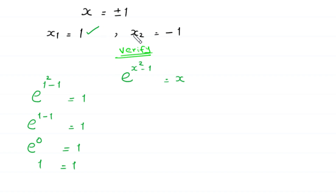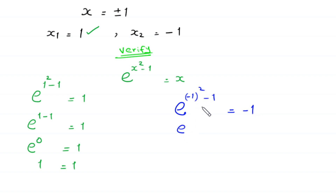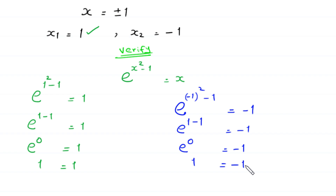Now putting x2 equals negative 1 in the equation: e to the power negative 1 squared minus 1 equals e to the power 1 minus 1 equals e to the power 0 equals 1, but the right-hand side is negative 1. Since 1 is not equal to negative 1, x2 equals negative 1 is not a solution — we reject it. Therefore, the only solution of this equation is x equals 1.